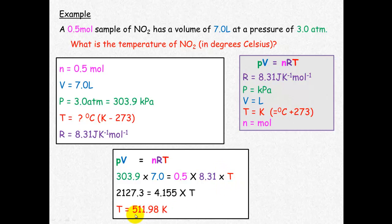When you work that out, T equals 511.98 Kelvin. The answer must be in degrees Celsius, so we subtract 273 and get 238.99 degrees Celsius.